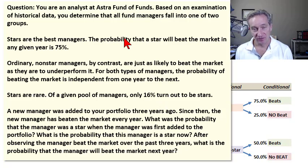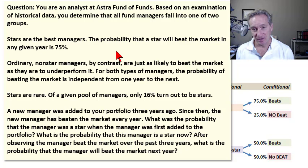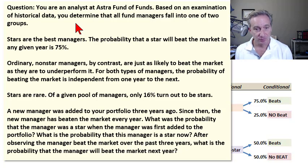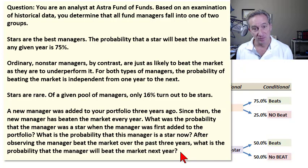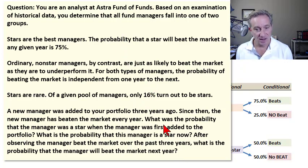My previous video illustrated a simple case of the Bayes Theorem, and now I'd like to take it up a notch and use the next sample question from Miller Chapter 6, which is FRM assigned. This is an interesting application of the Bayes Theorem — a little more difficult, but there are only three assumptions given, and that is all we need to answer the compound question.